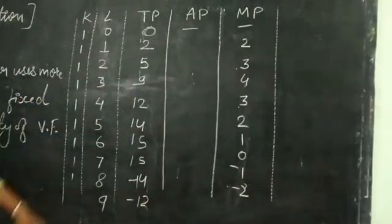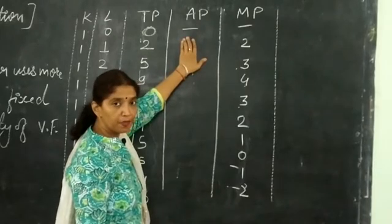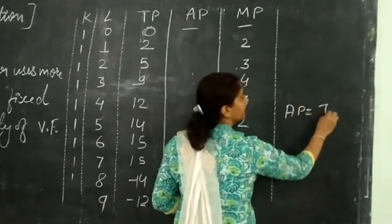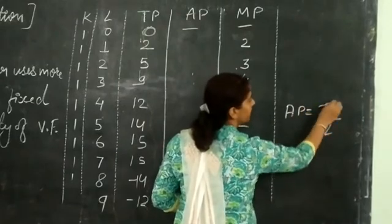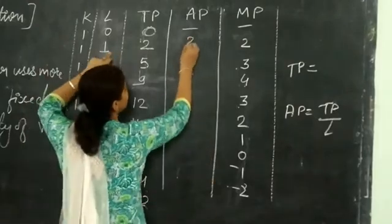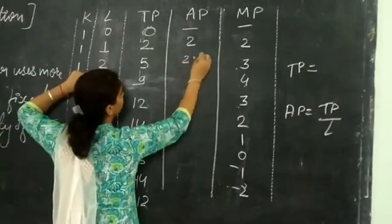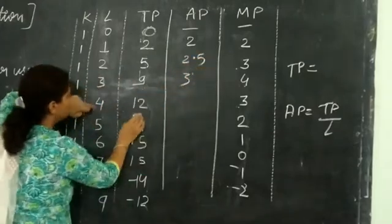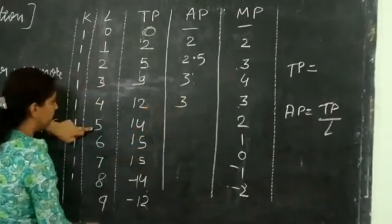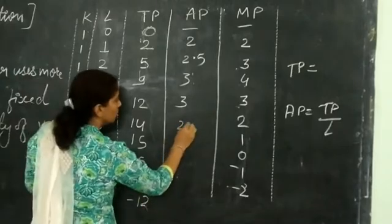Now, how do we calculate average production? Average production is calculated as TP divided by labor. So: 2÷1=2; 5÷2=2.5; 9÷3=3; 12÷4=3; 14÷5=2.8.